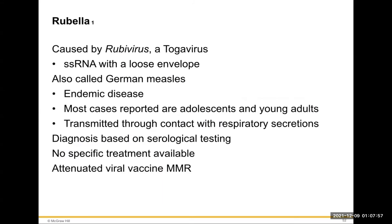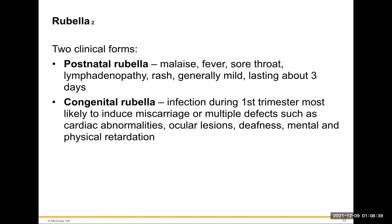Rubella is caused by the rubivirus — a single-stranded RNA virus with a loose envelope — also called German measles. Rubeola is regular measles; rubella is German measles. It's an endemic disease; most cases reported are in adolescents and young adults. Transmitted through contact with respiratory secretions. Diagnosis is based on serological testing. No specific treatment, but the MMR vaccine is available. Two clinical forms: postnatal rubella — malaise, fever, sore throat, lymphadenopathy, mild rash lasting about three days — and congenital rubella, infection during the first trimester most likely to induce miscarriage or multiple defects including cardiac abnormalities, ocular lesions, deafness, and mental and physical retardation.